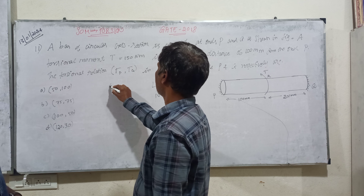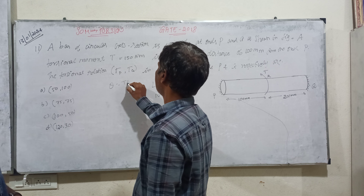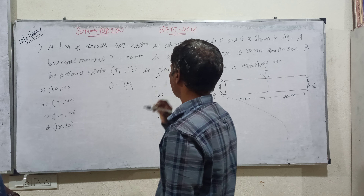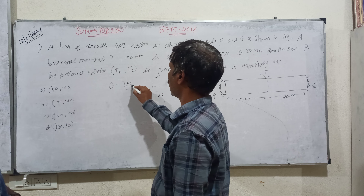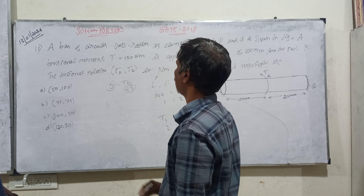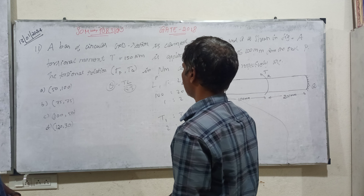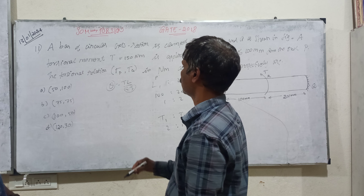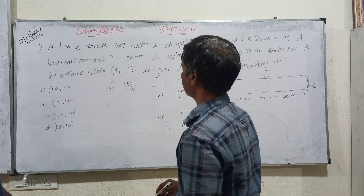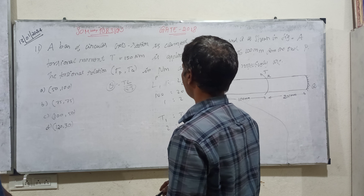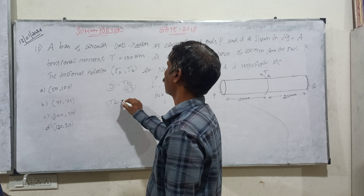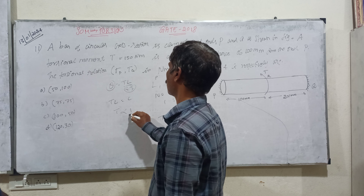We apply the theta formula: theta equals TL divided by GJ. So T1 and T2 ratio depends on J. For the same cross section, J is constant and G is constant. So theta depends on T and L. Since theta is constant at the junction, T is inversely proportional to L.